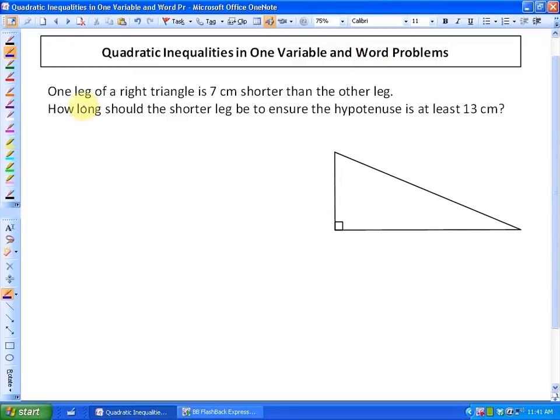Here's the problem. One leg of a right triangle is 7 cm shorter than the other leg. How long should the shorter leg be to ensure the hypotenuse is at least 13 cm? So it's always good to draw a picture. I'm going to represent x as my longer leg and represent x minus 7 as my shorter leg.